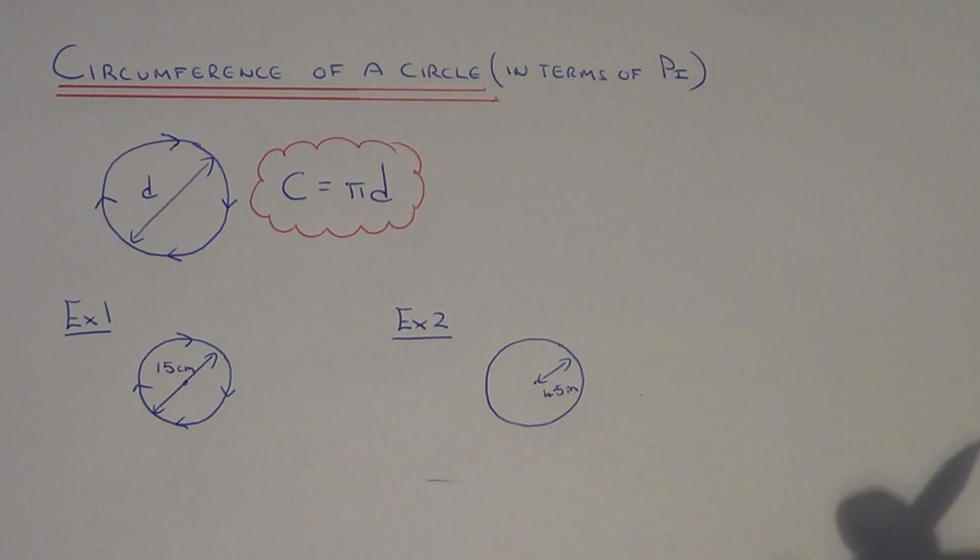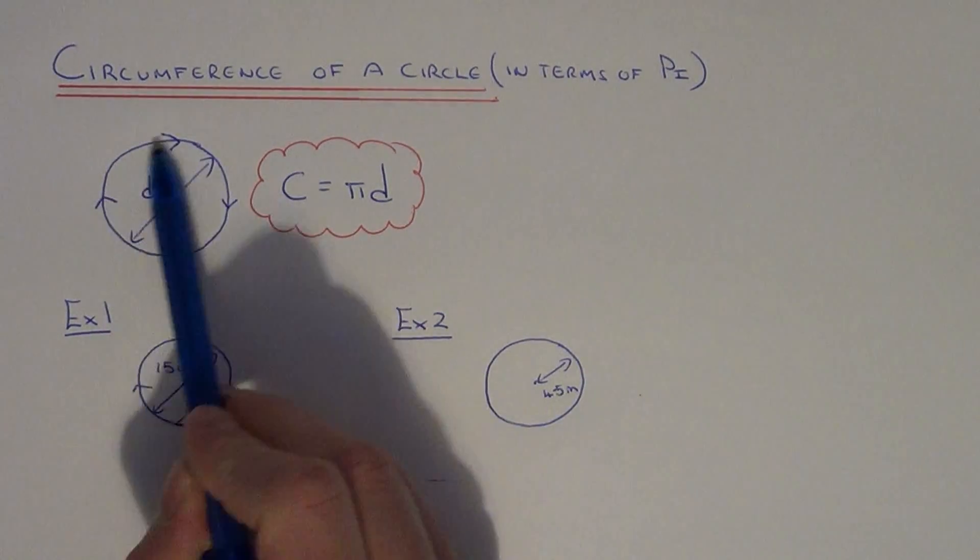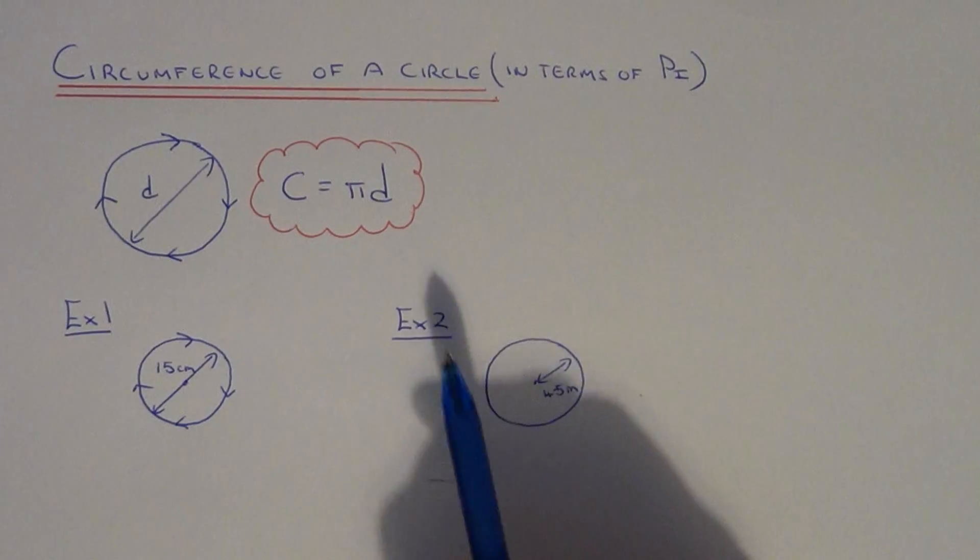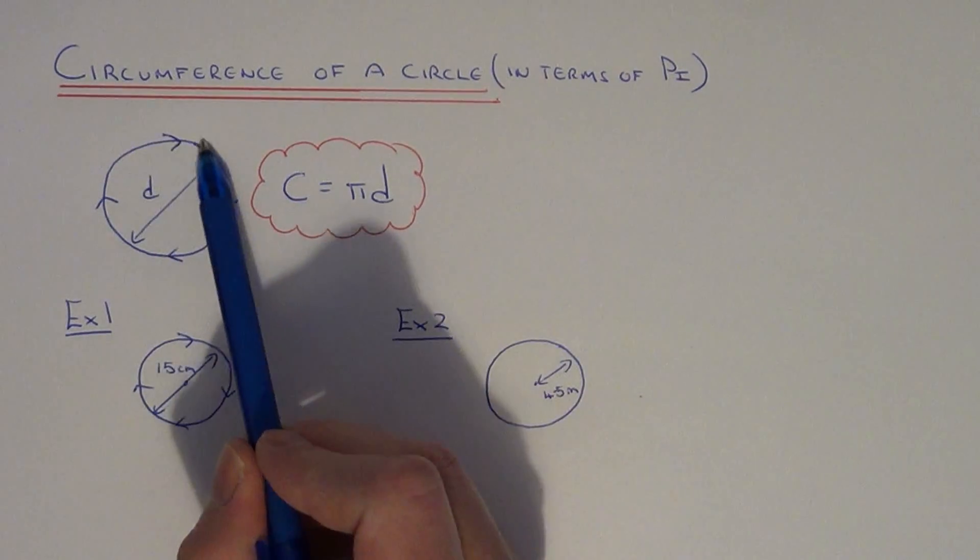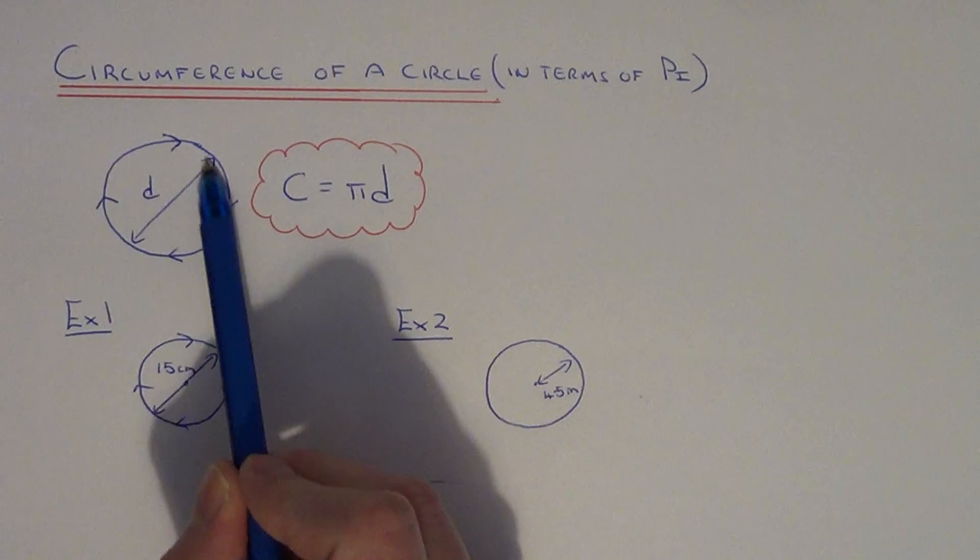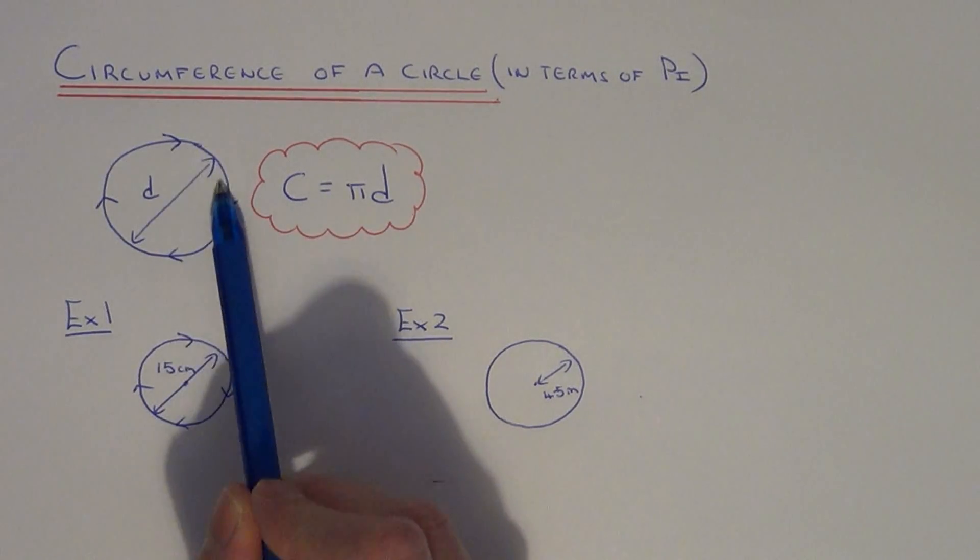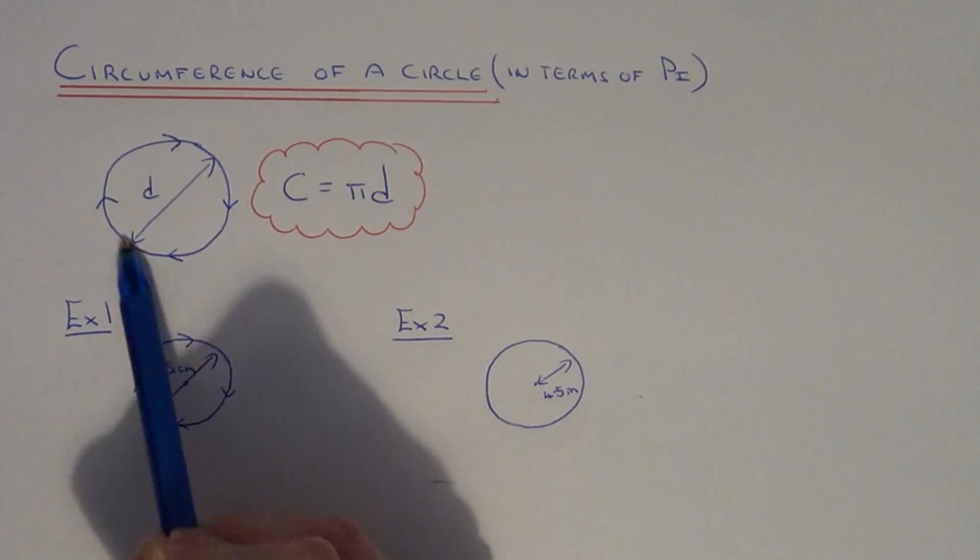Today I'm going to show you how to work out the circumference of a circle, leaving your answer in terms of pi. The circumference is the distance around the outside of the circle. Basically, it's the same as working out the perimeter.